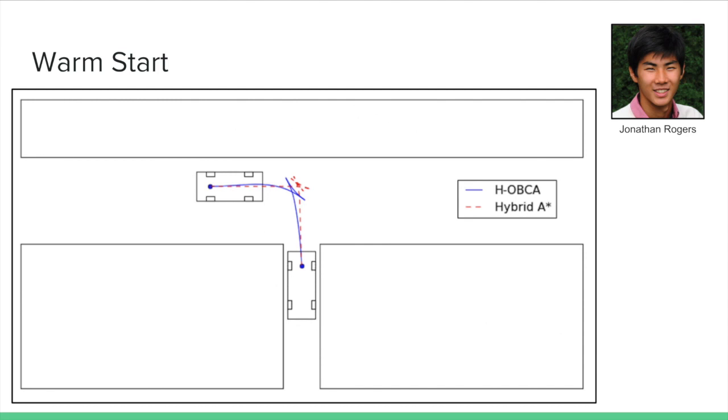This figure, as you can see, demonstrates that the hybrid A-star provides a feasible but coarse trajectory for a front-end park, while the OVCA algorithm, as you can see with the blue line, provides the optimal smooth trajectory. Now I will let Byron talk about the simulation results.